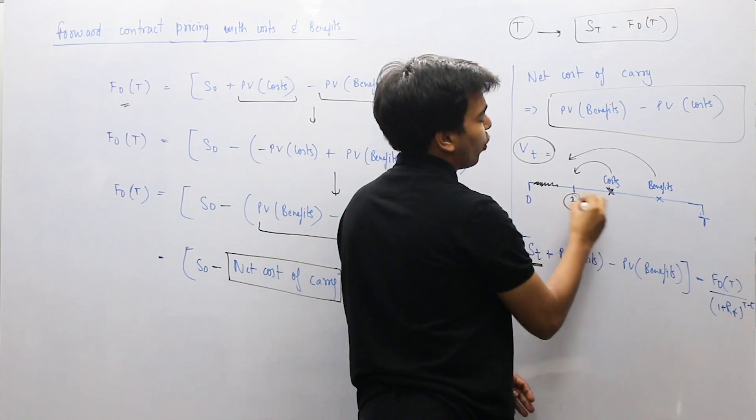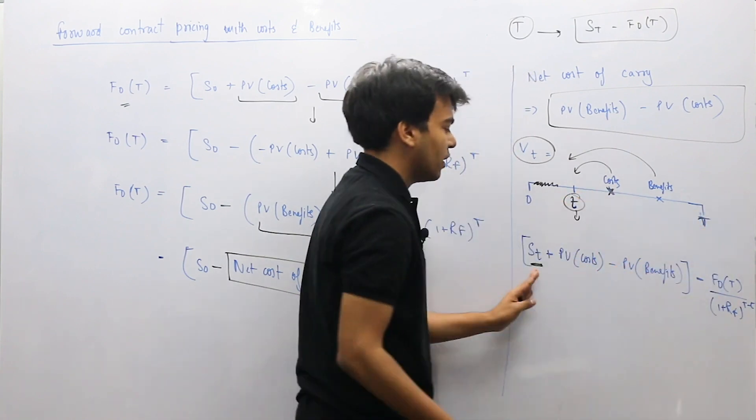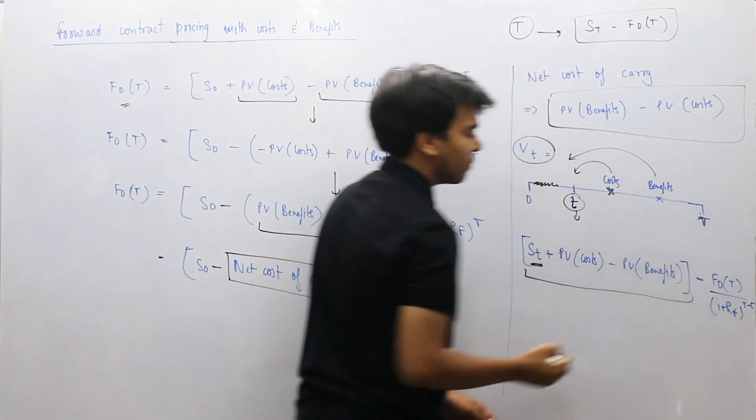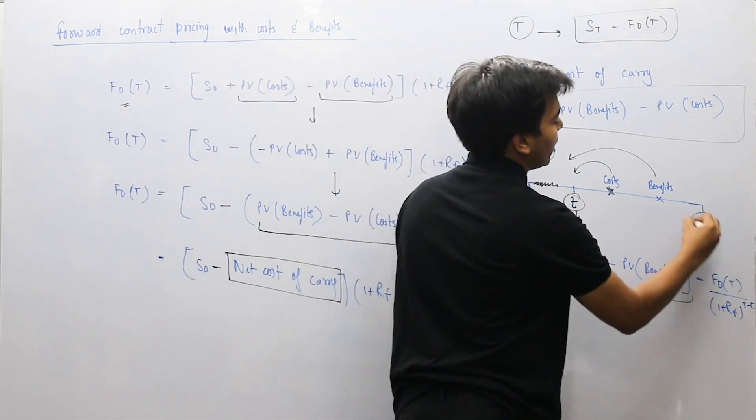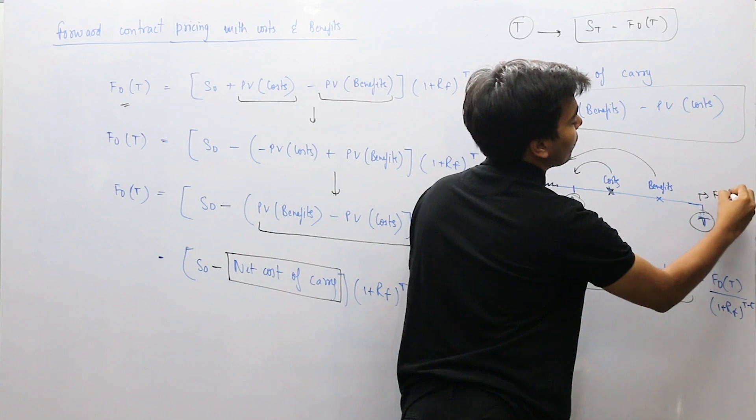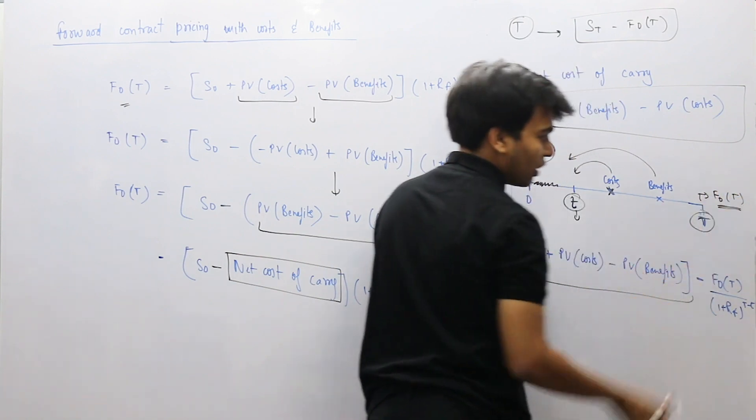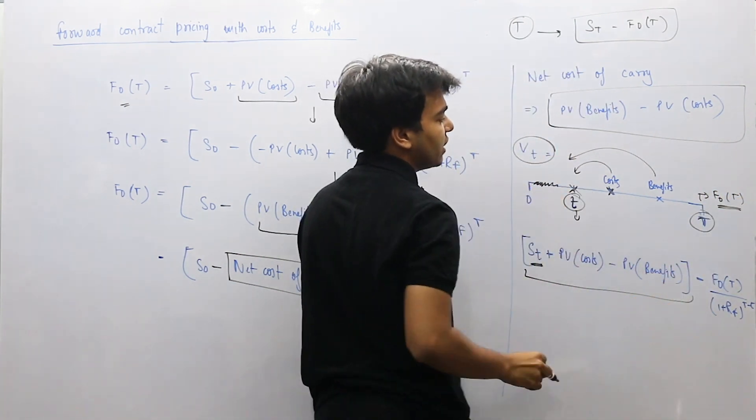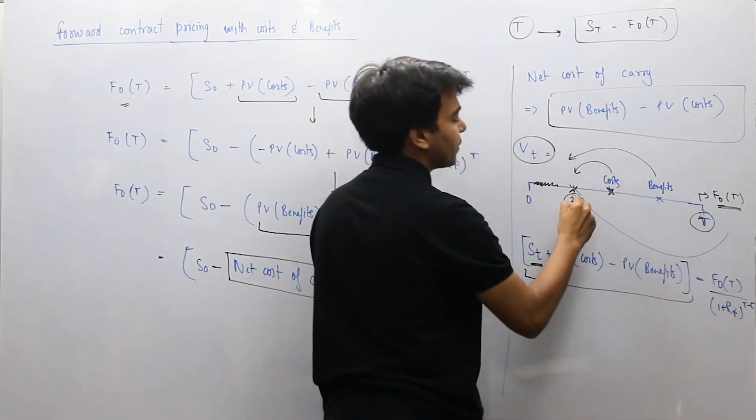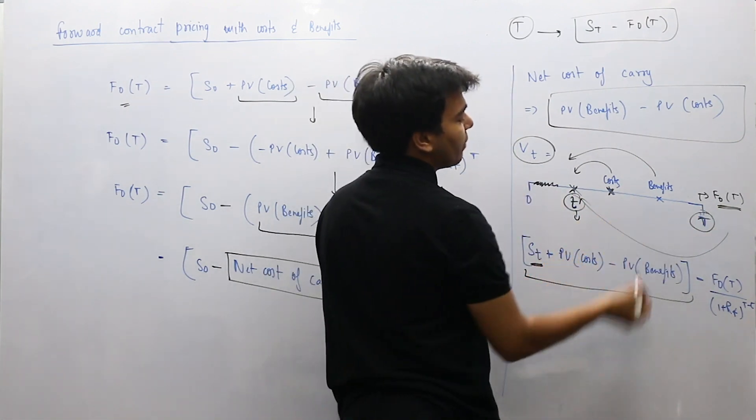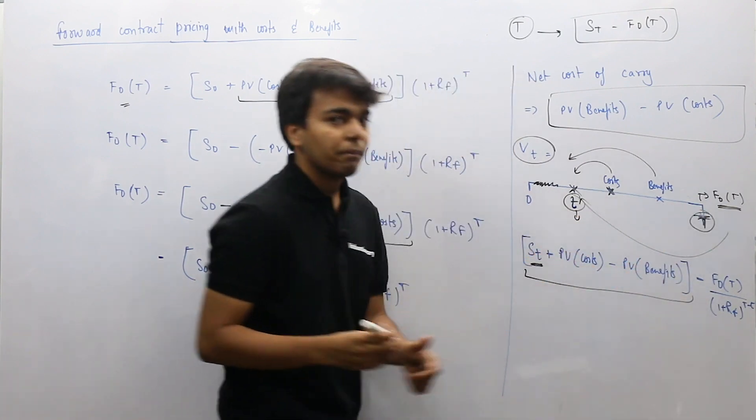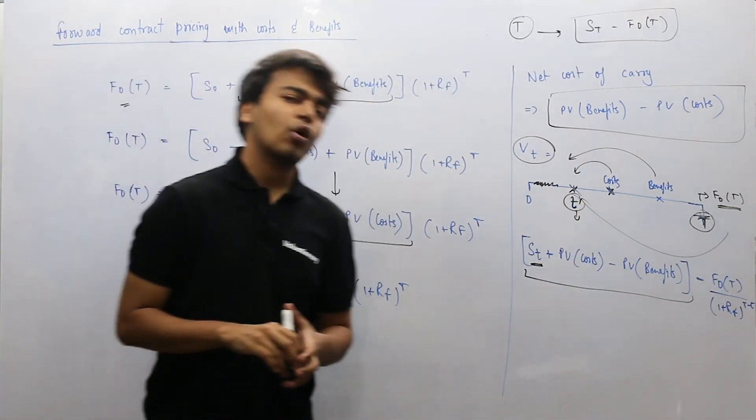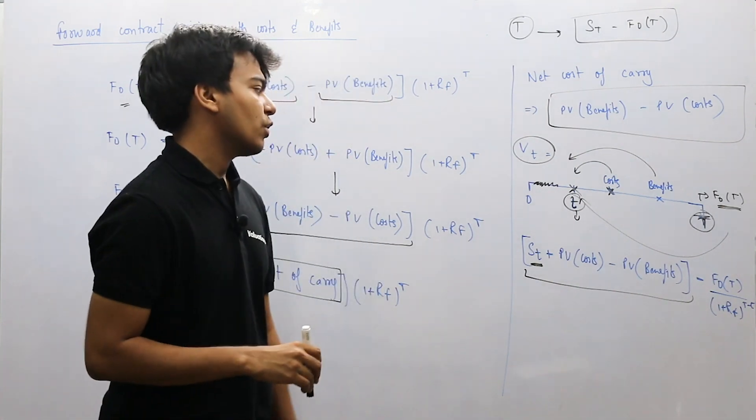We will calculate the difference. So this becomes your price, including the cost and the benefits, minus the forward price decided at time 0. Now that forward price was decided at time 0, but you want to know the value at time t, so you bring the forward price back to time t by dividing it by 1 plus RF. You divide by 1 plus RF raised to capital T minus small t.